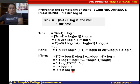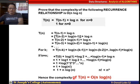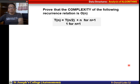We simplify log(n!): since n! < n^n, taking logs gives log(n!) ≤ n·log(n), so log(n!) ≈ n log n. Substituting back, T(n) = 1 + log(n!) ≈ 1 + n·log(n). Removing the constant, the complexity of this recurrence is O(n log n).